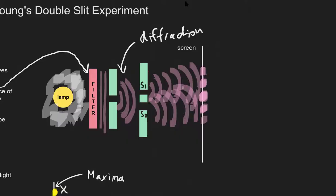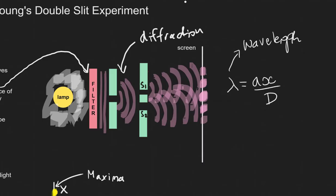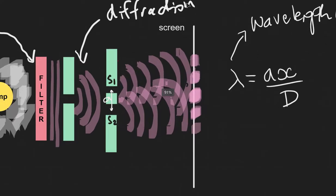The equation we're going to use to describe this experiment is the famous lambda equals AX divided by D. Lambda is the wavelength, typically measured in metres — that's the wavelength of the source of light. A is the slit separation, which is typically taken centre to centre, so this distance here is A. And X is our fringe separation — the distance from a bright fringe to a bright fringe.